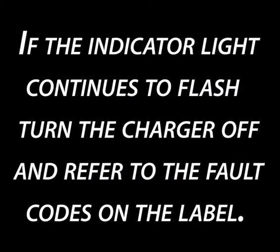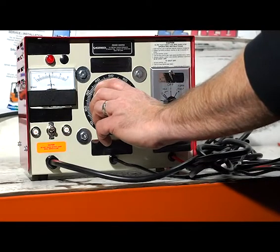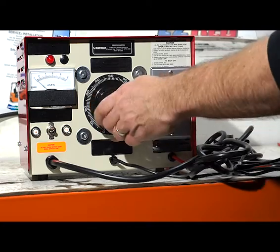If indicator light continues to flash and does not stay on, turn charger off and refer to fault codes on label. When charging is completed, turn transformer dial back to zero.